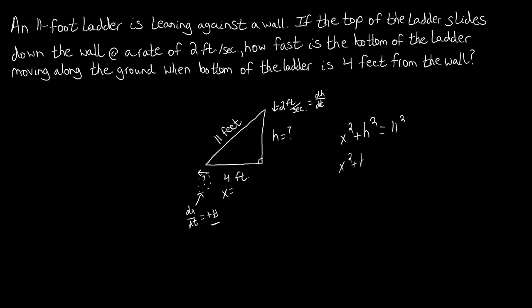Now that we have this equation — the Pythagorean theorem tailored to our specific case — we're going to differentiate it with respect to time. This will incorporate the related rates we have. Differentiating h with respect to time and x with respect to time will bring in dx/dt, which is what we're solving for. We also want to keep the original equation in mind, as it will help us solve for another value later on.